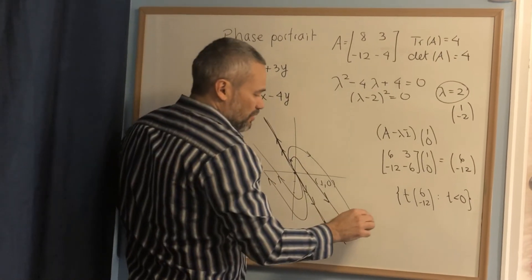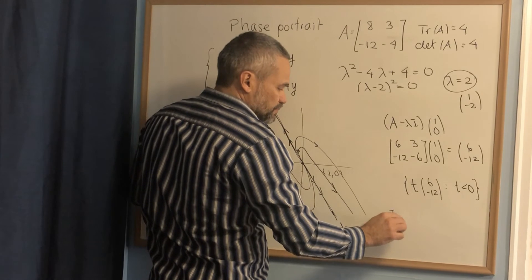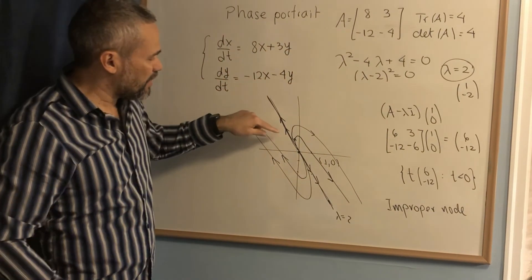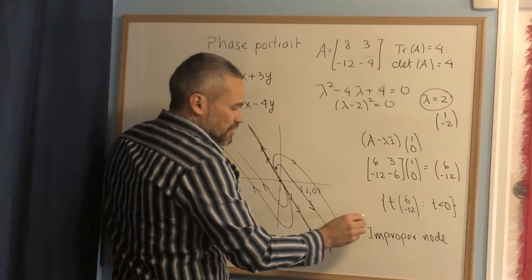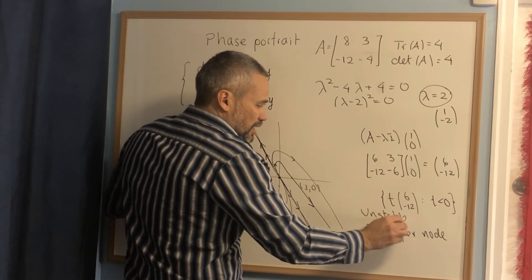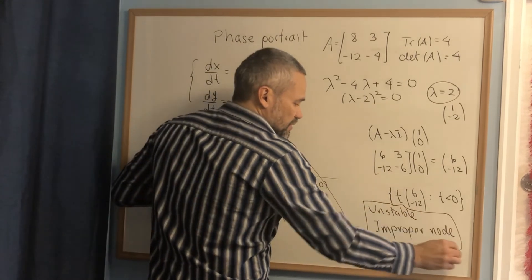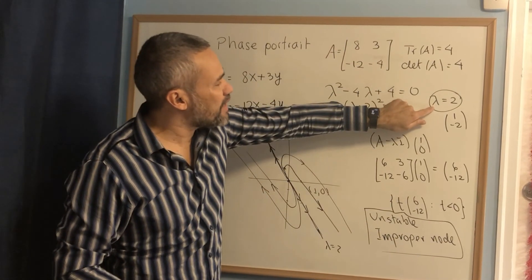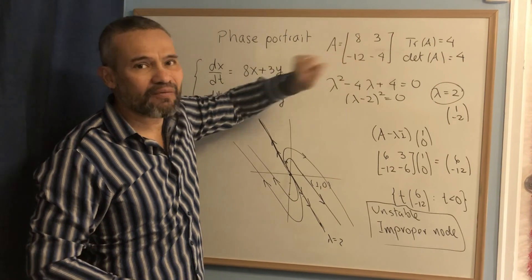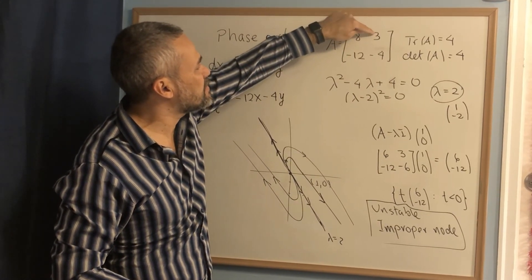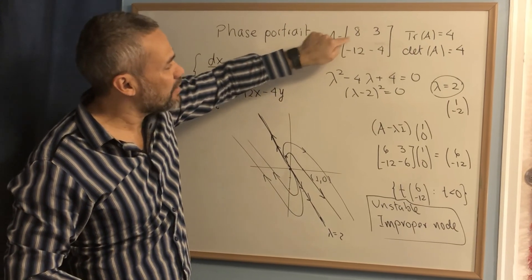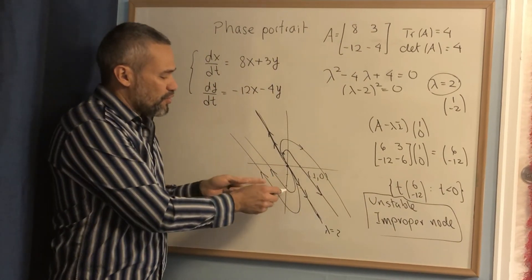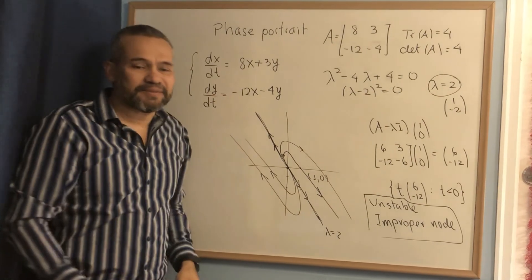Remember, this is called an improper node. Since all the orbits go away, we call this unstable. Unstable improper node. The reason it's called improper is because in this case, even though we have only one eigenvalue, this matrix is not a diagonal matrix. A diagonal matrix is one that has zero here and zero there, but this is not diagonal. It has only one eigenvalue. That's the reason it's called an improper node. Unstable is because all the orbits go away from the origin. This is it.